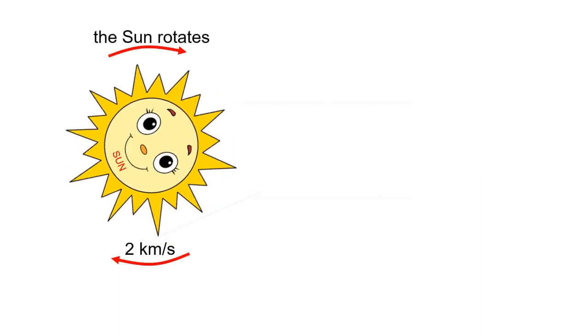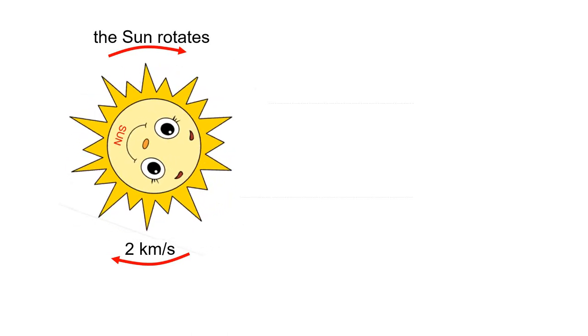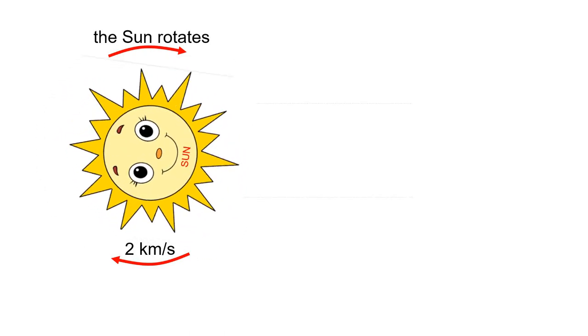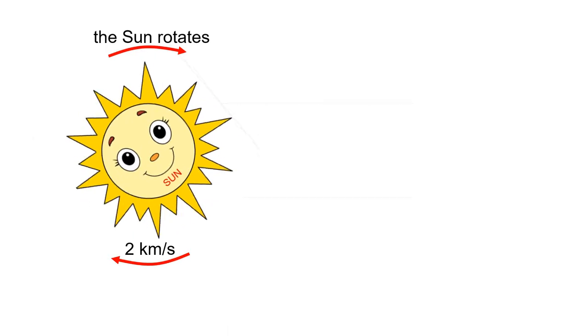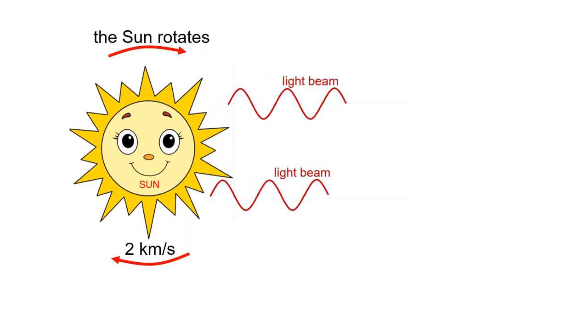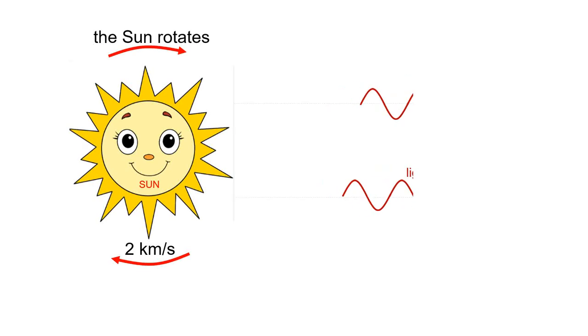The sun is rotating. Its peripheral speed is 2 kilometers per second. In one case, the light source is moving toward us, and in the other case, it is moving away from us. In the presented measurement, we measure the wavelength of light from one and the other edge of the sun.